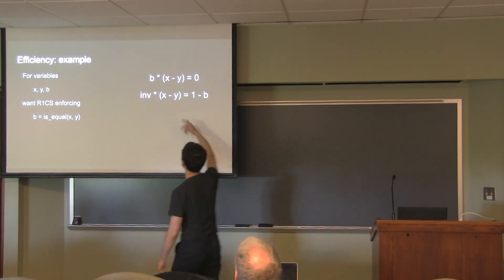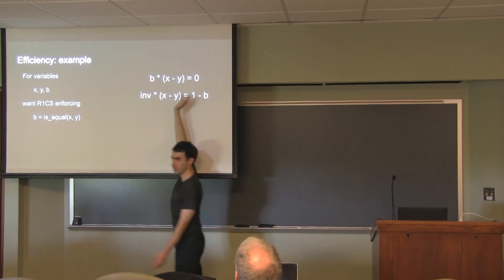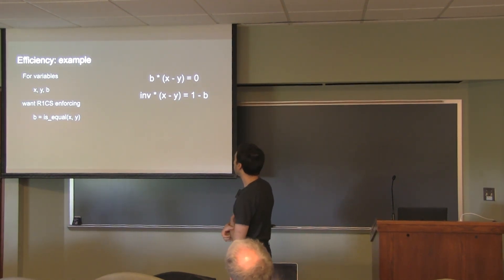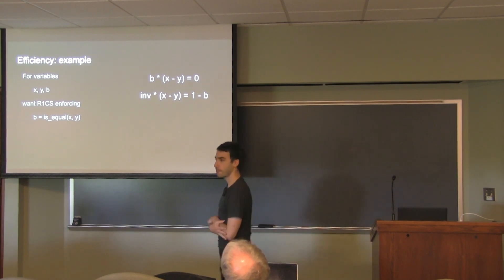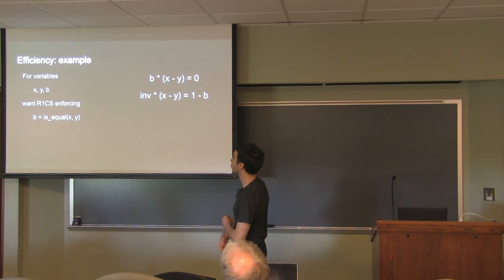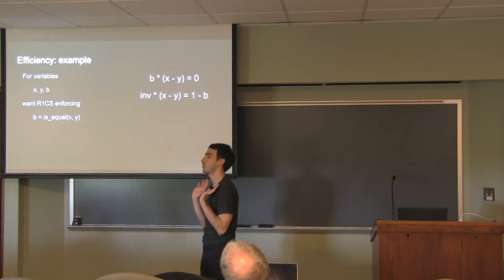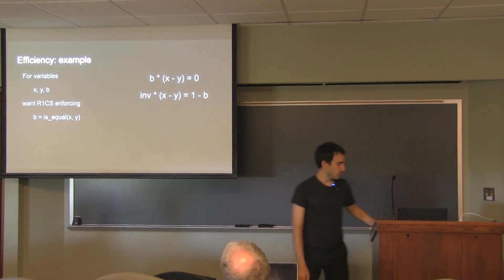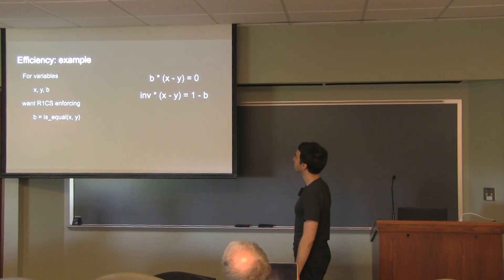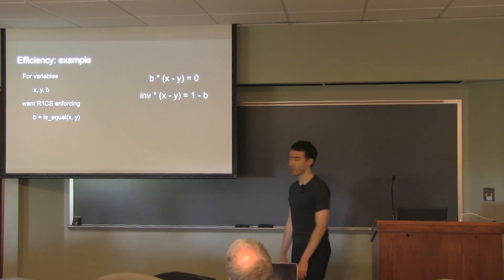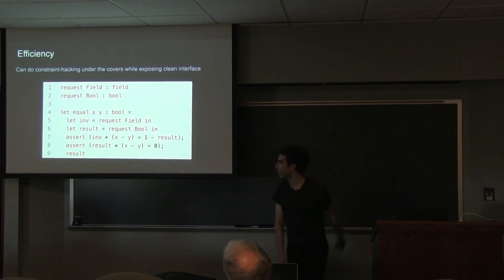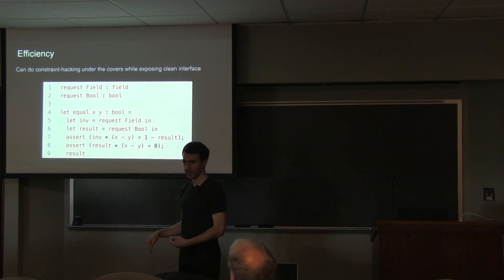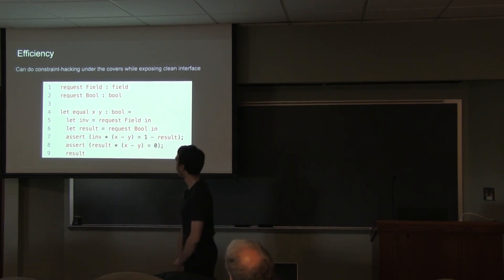Can b be 1? If b is 1, you have x minus y equals 0, so x equals y. And b is constrained by these equations to be Boolean. You write an 'equals' function: request some field element called 'inv', request some boolean called 'result', assert the first constraint, assert the second constraint, and return result. What's nice is this is totally composable — the external signature hides the fact that it has an auxiliary variable. All you see on the outside is a function taking two field elements and producing a boolean.